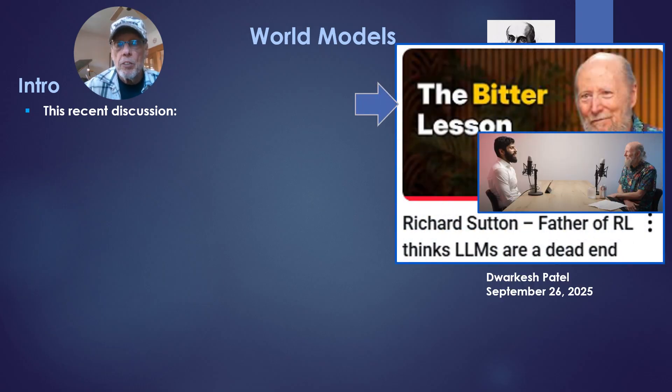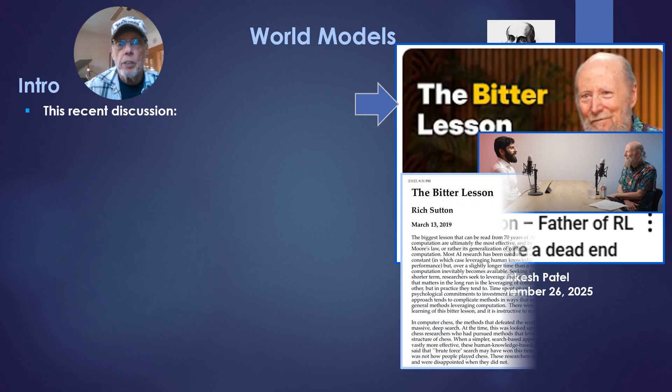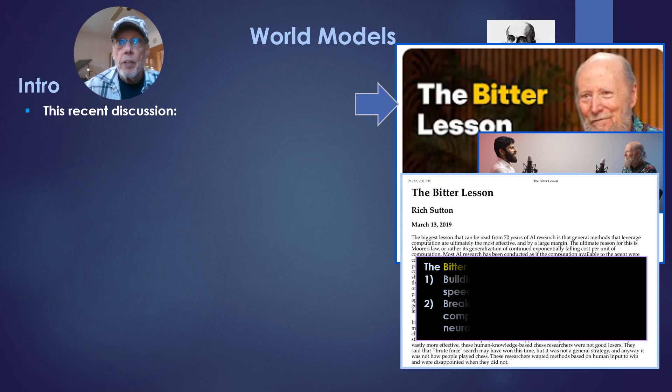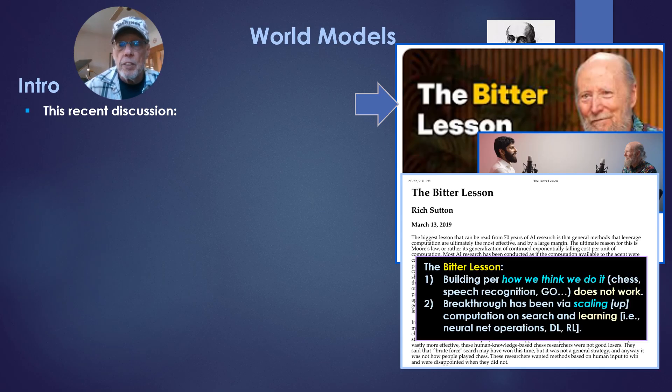Richard Sutton, Father of Reinforcement Learning, winner of the Turing Prize recently with Dwarkesh Patel just very recently, a week ago. On the bitter lesson, now the bitter lesson is a little paper that Sutton did.